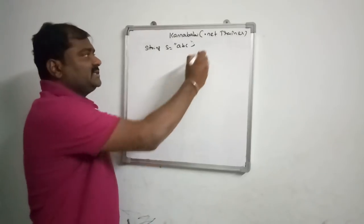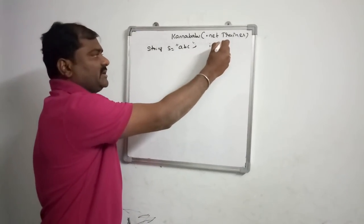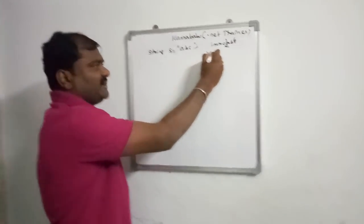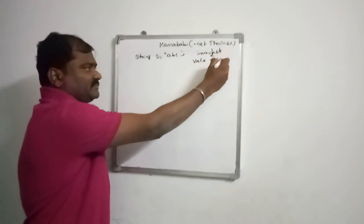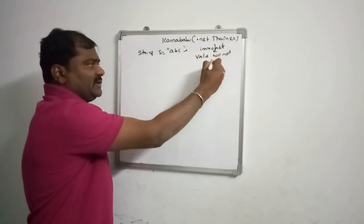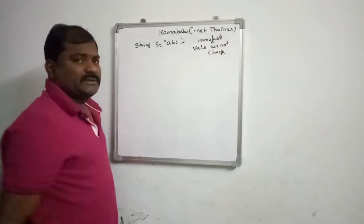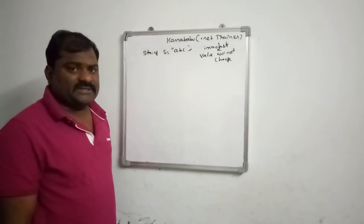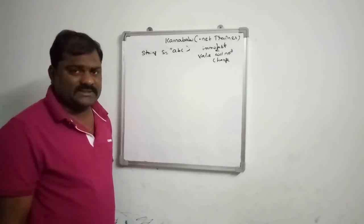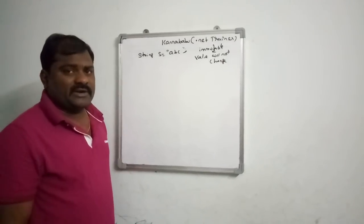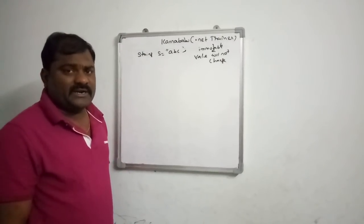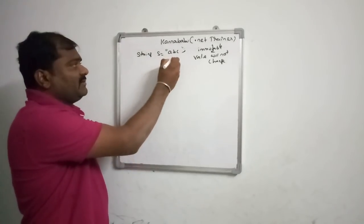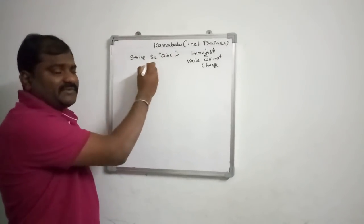Generally, string is immutable. Immutable means the value will not change. Internally in C# .NET or Java, strings are nothing but predefined classes. So whenever you try to store any value in a string, internally an object is created for that string.